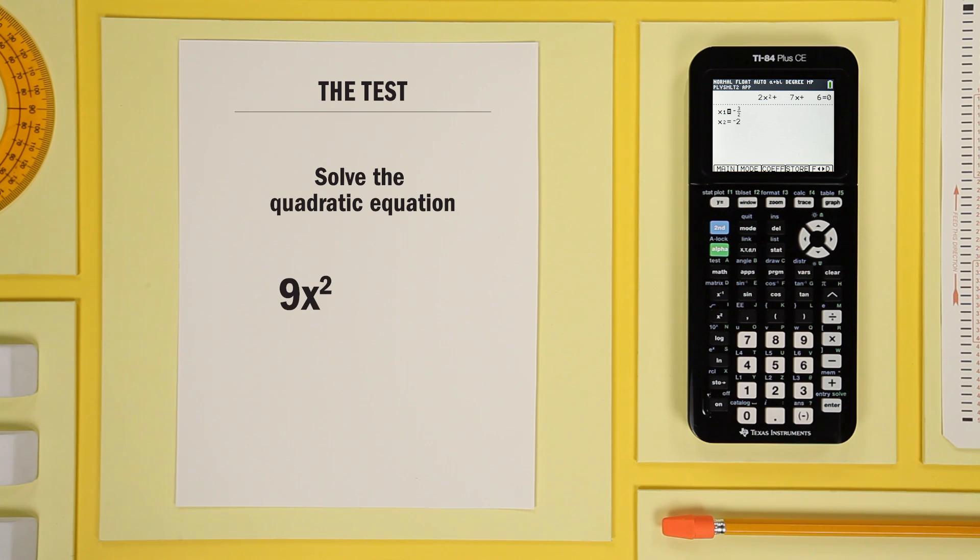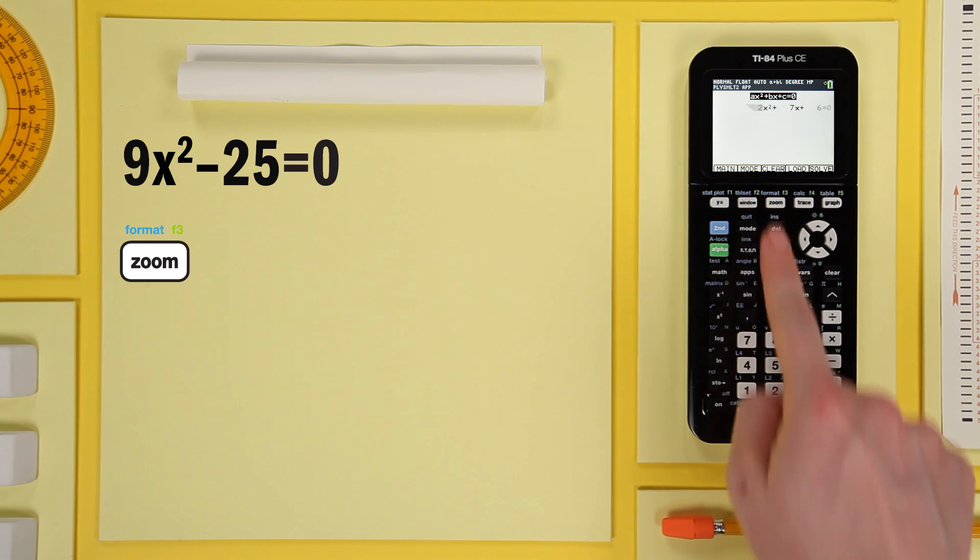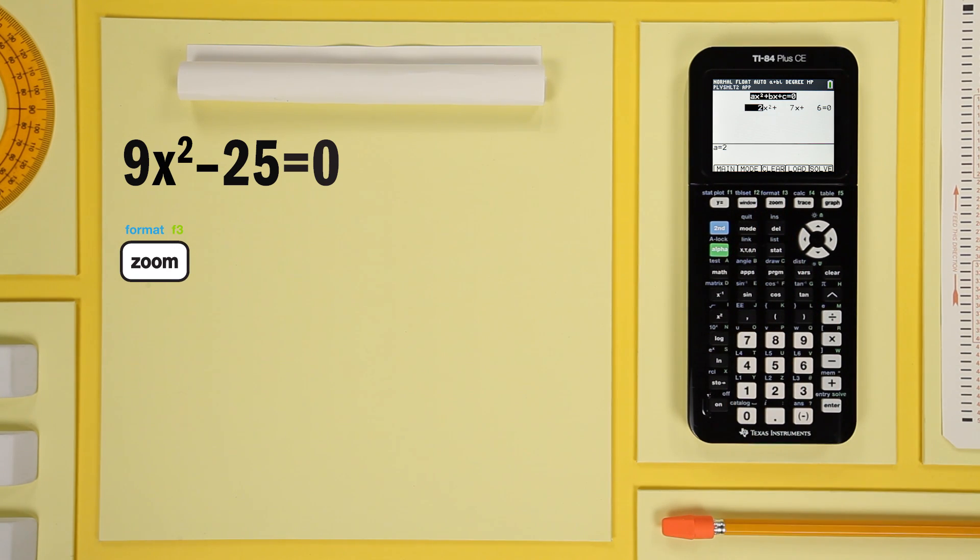9x squared minus 25 equals 0. Press zoom to get back to the coefficients template. Enter your coefficients.